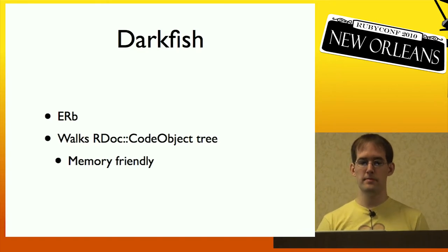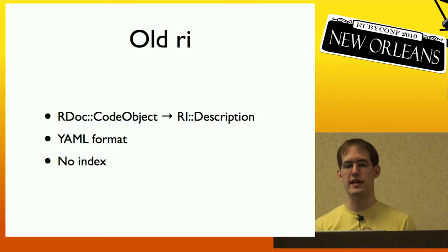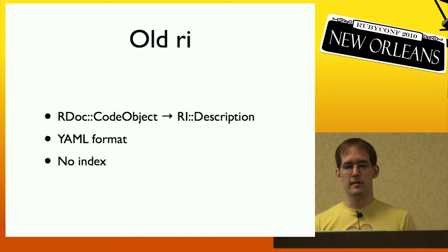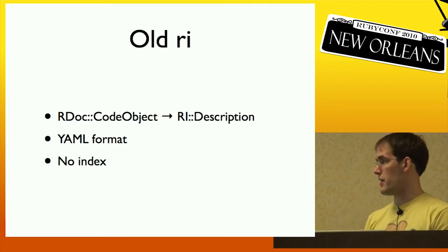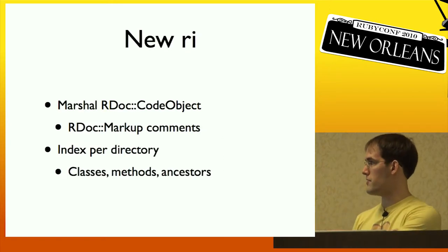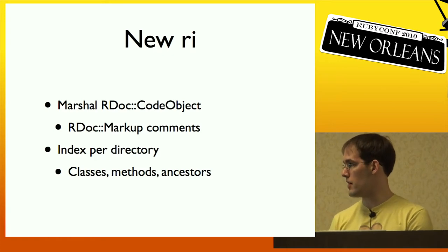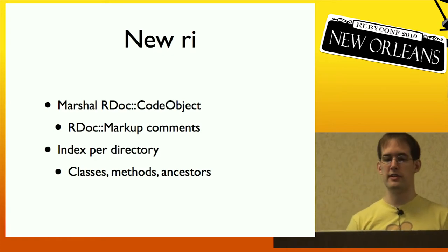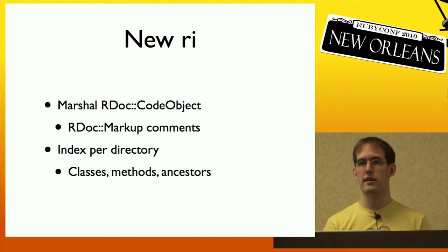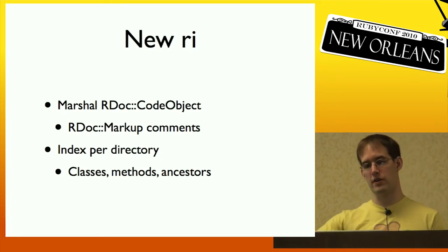The original RI generator translated the code object tree into a separate tree of RI description objects, which were stored in YAML format, and there was no index to speed up lookups. The new RI uses the code object tree with RDoc markup content and comments, and has an index per directory. So we can easily see all the classes, methods, and the ancestor chain for all the gems right off the bat, instead of having to walk through a bunch of files.